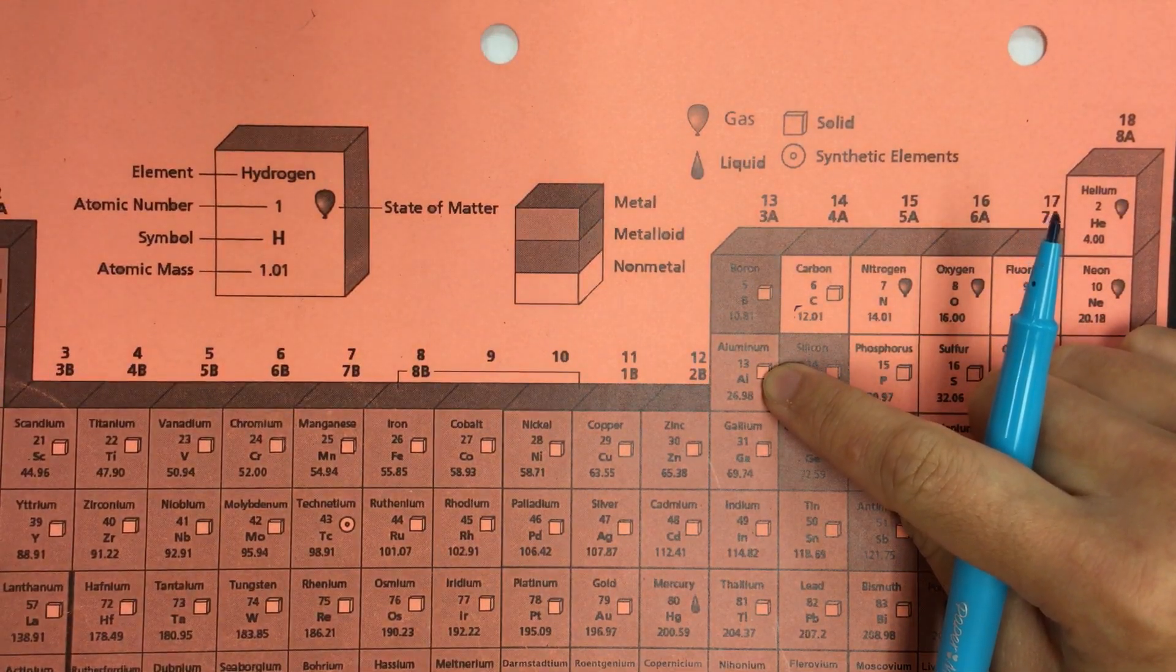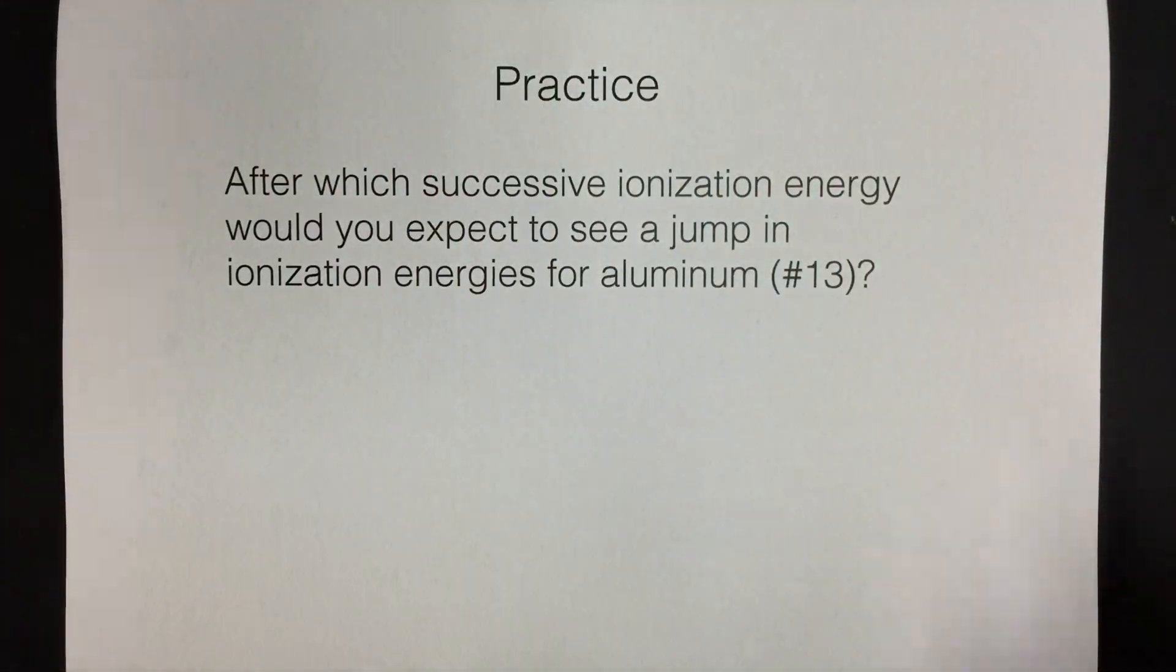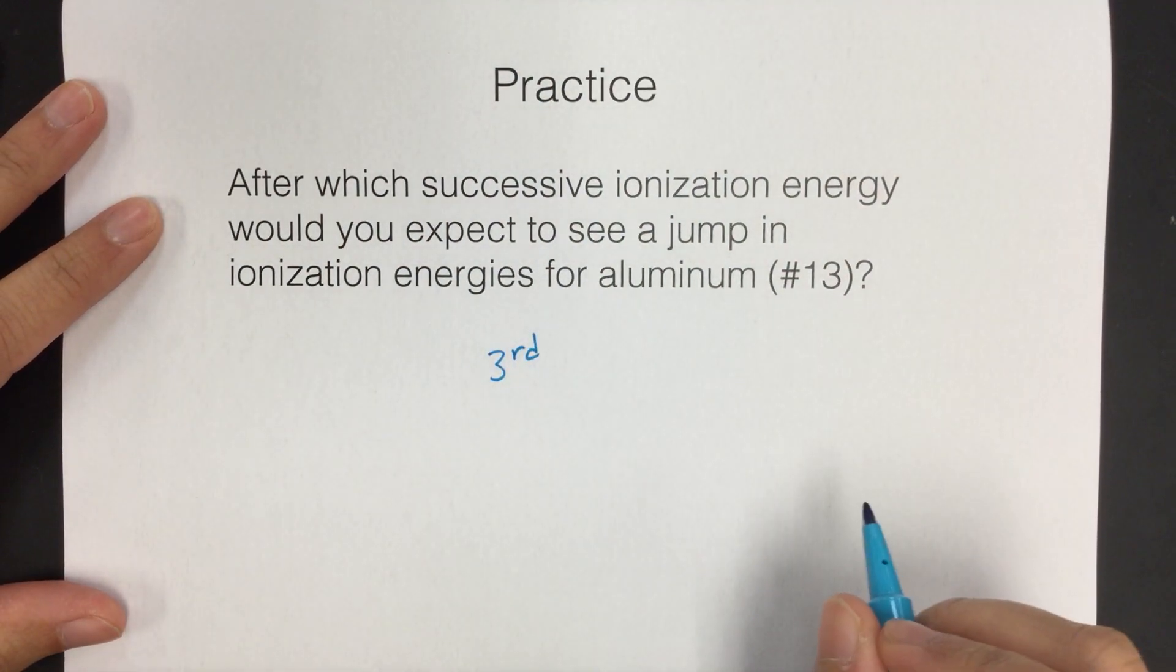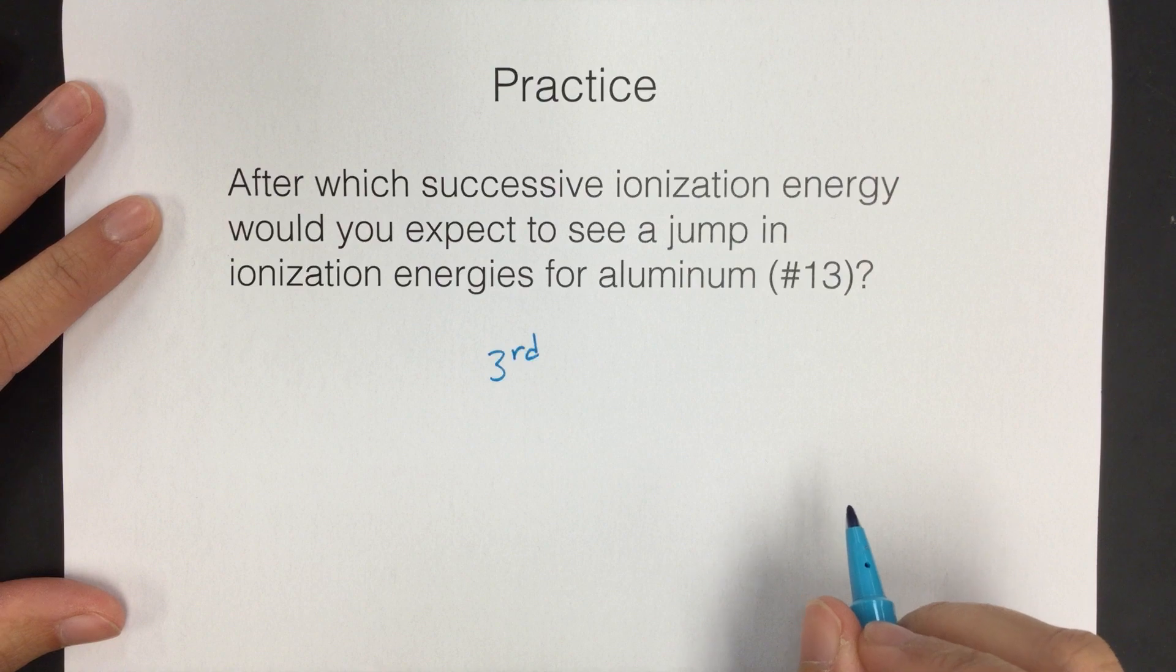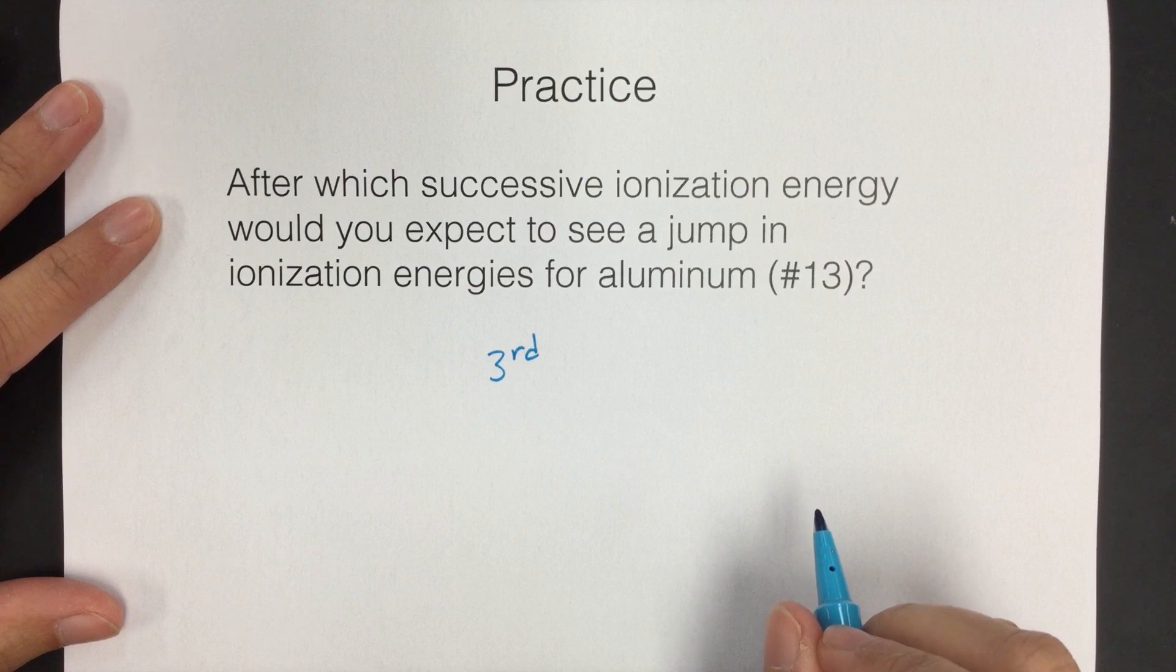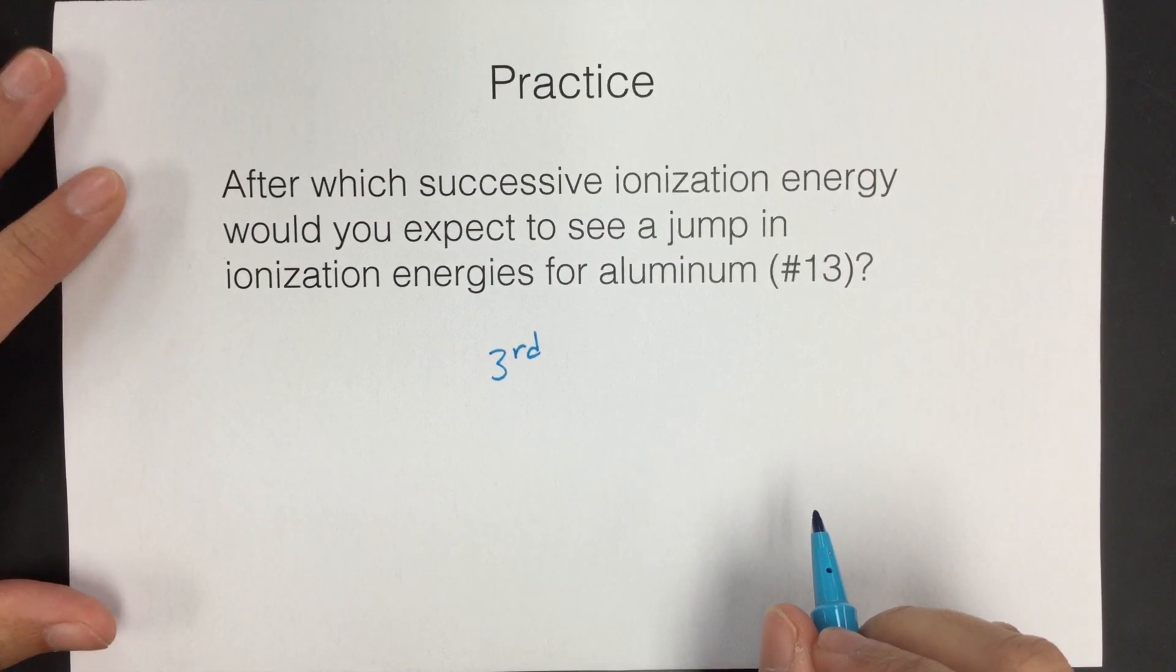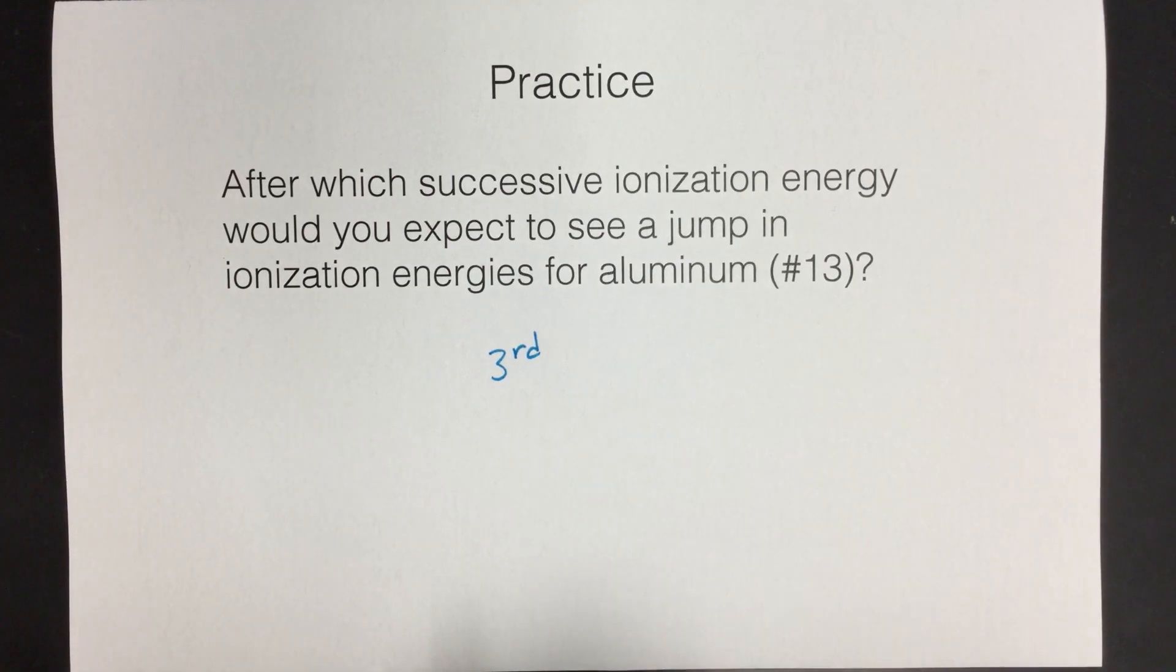So we would expect to see a jump in ionization energies after the third, because once we remove all three of the valence electrons, aluminum will not want to get rid of a core electron, so it would take a lot more energy for us to remove a fourth electron. So this is all related to valence electrons anytime you see these questions about successive ionization energies.